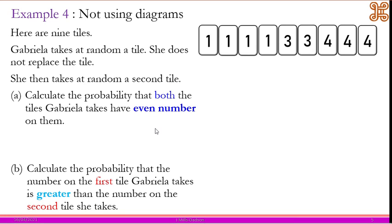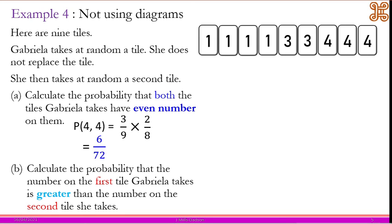For part a — both cards must be even. The only even number available is four, so both tiles must be four. Getting a four the first time is 3 over 9. If you've already gotten a four first, there will be only two fours left, so the second pick is 2 over 8. That gives us 6 over 72.